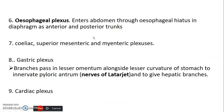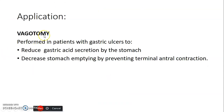The gastric plexus — branches of the vagus nerve pass to the lesser omentum alongside the lesser curvature of the stomach to innervate the pyloric antrum — that's what we call the nerves of Latarjet. This vagus nerve innervates the stomach, and therefore you can apply this during vagotomy. A patient who has gastric ulcers producing a lot of gastric acid leading to ulceration — before, they used to do vagotomy, removing branches of the vagus nerve from the region of the stomach, thereby reducing gastric acid secretion so the ulcers are able to heal. Vagotomy also decreases stomach emptying and prevents terminal antral contraction.